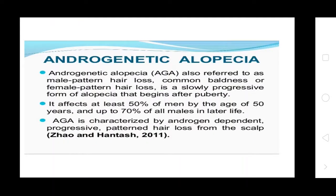Androgenic Alopecia, also referred to as male pattern hair loss, common baldness, or female pattern hair loss, is a slowly progressive form of alopecia that begins after puberty. It affects up to 50% of men aged 15 years and up to 70% of males later in life. Age is affected by androgen-dependent progressive pattern hair loss from the scalp.